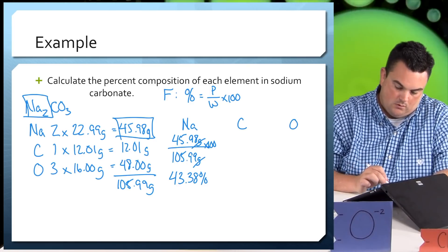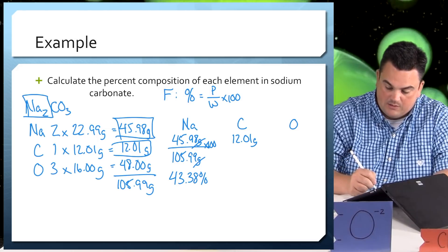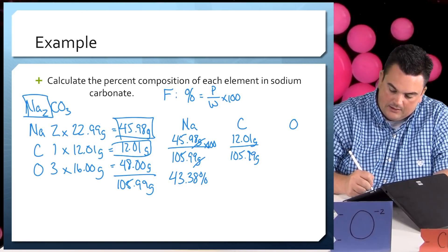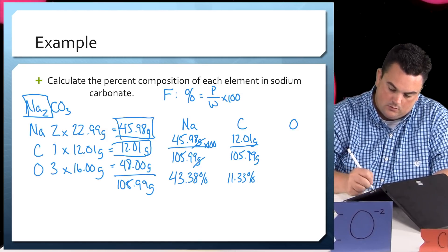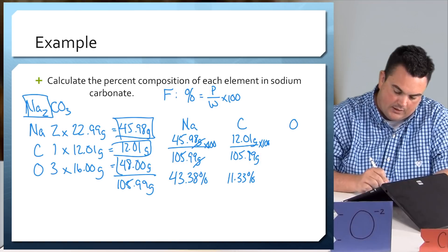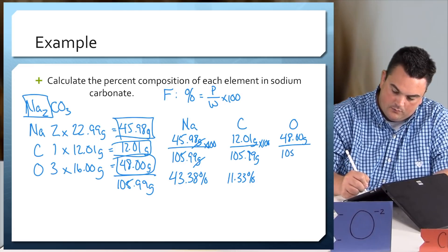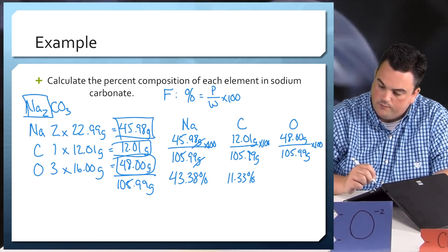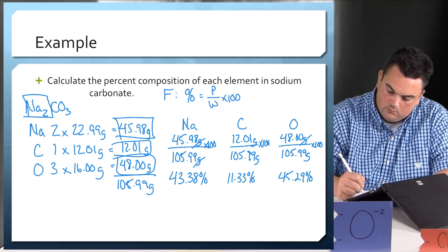Let's do the same for carbon and oxygen. Carbon is 12.01 — there's only one — over 105.99 grams, times 100, gives 11.33%. And for oxygen, the total is 48.00 because of the three oxygens: 48.00 grams divided by 105.99 grams times 100 gives 45.29%. If we want to be sure we did everything correctly, we can make sure everything adds up to 100%.